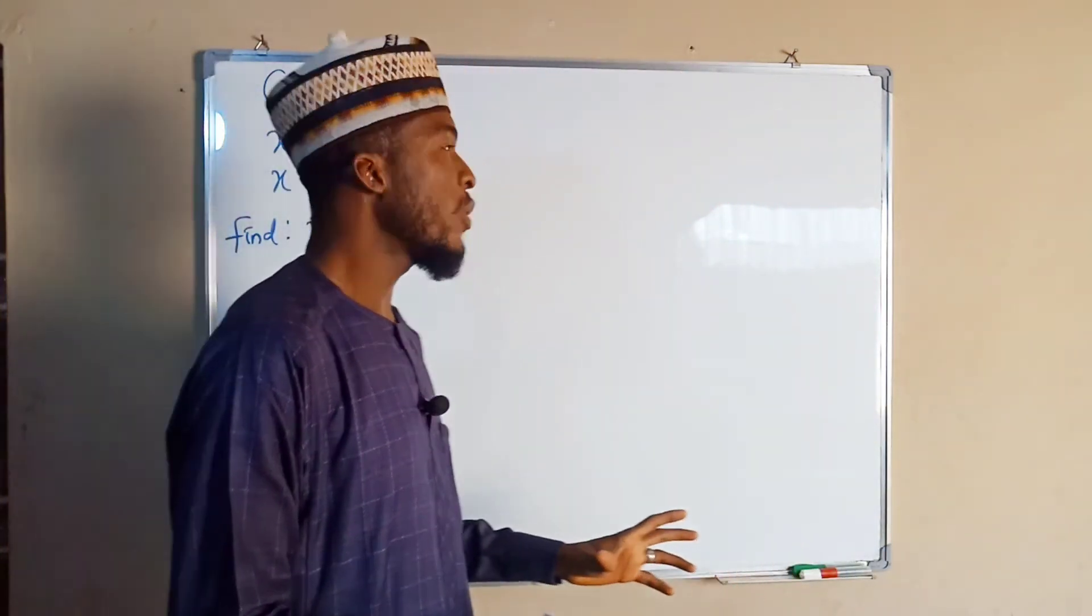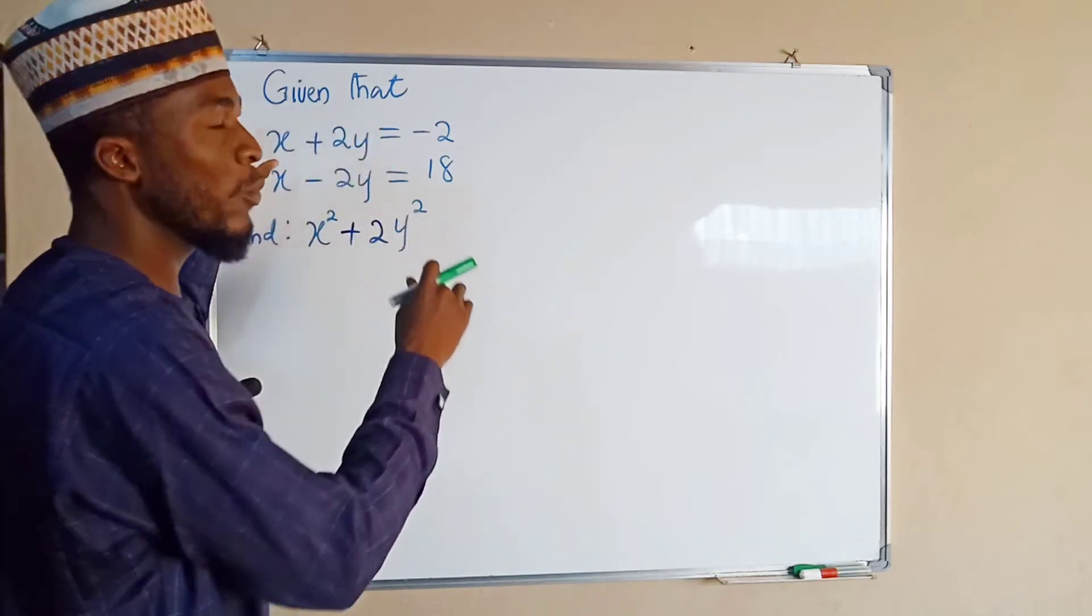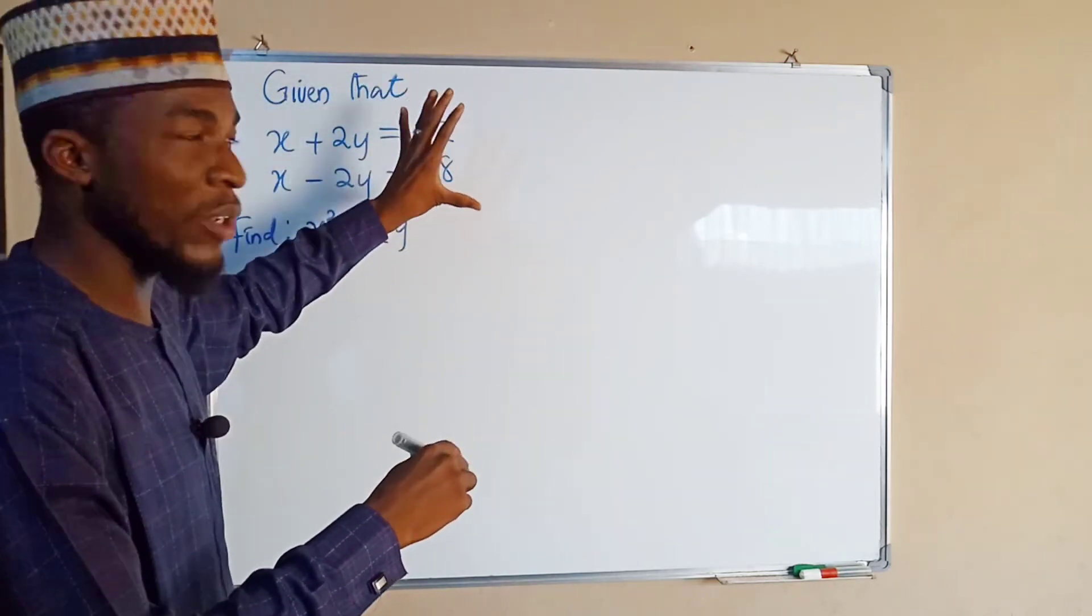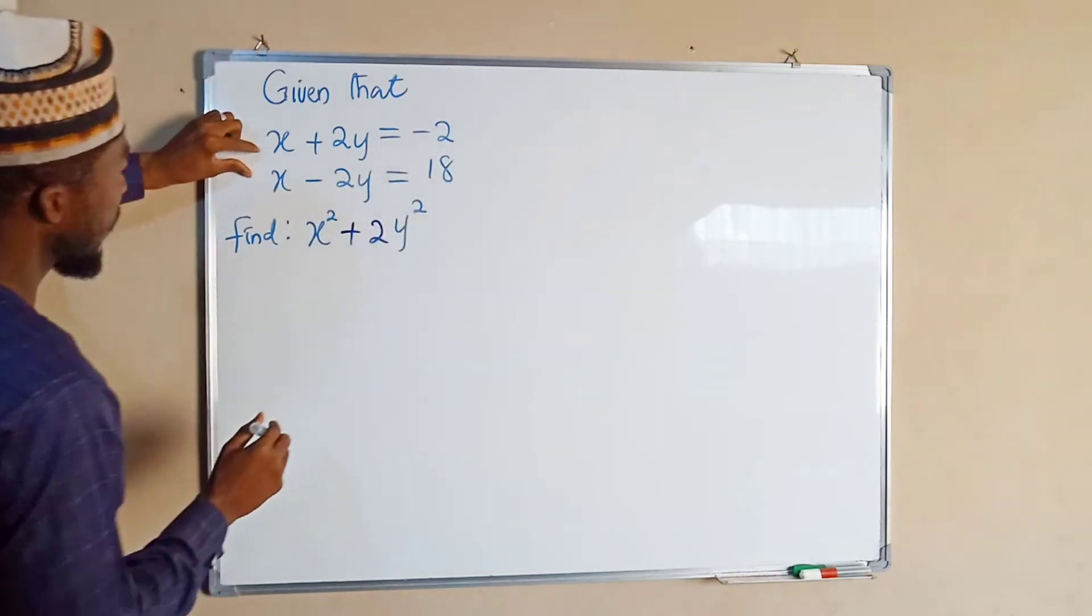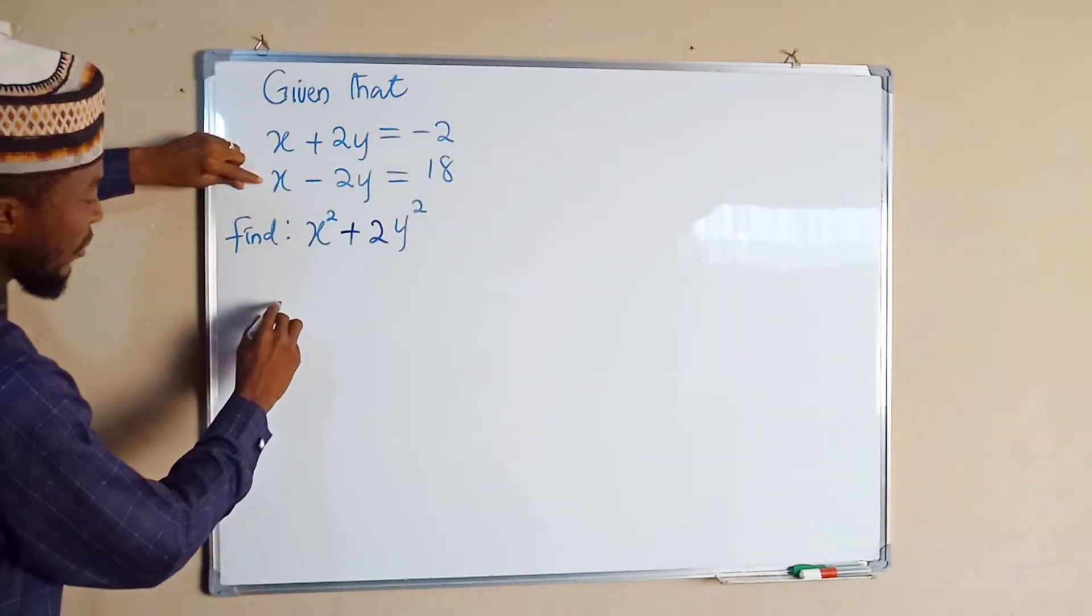First of all, we want to find the values of x and y that will satisfy these two equations by solving them simultaneously. Adding this equation and this equation, you can see that x + x is equal to 2x.